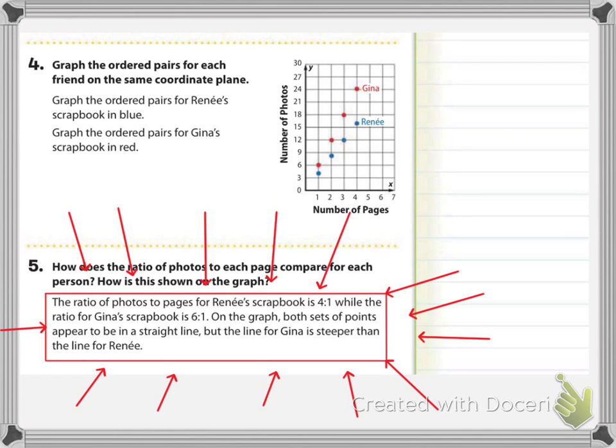So then it says on the graph, both sets of points appear to be in a straight line. So meaning like if I were to connect the dots, I would end up getting a straight line. So the red dots would be one line, the blue dots would be another line. And then it does say, but Gina's line is steeper than the line for Renee. So if you look at the red ones over here, so we're looking at the red lines, these guys right over here, they're steeper. And we know that because they appear to be much more upright, like more up and down than Renee's. Yes, Gina's lines are not very up down, but they are more up and down than Renee's are.